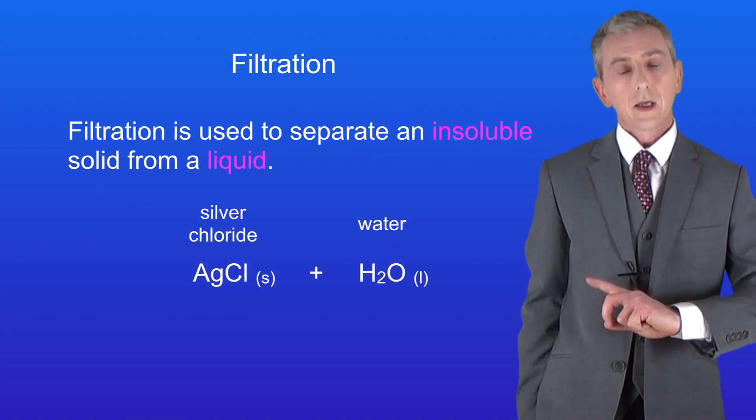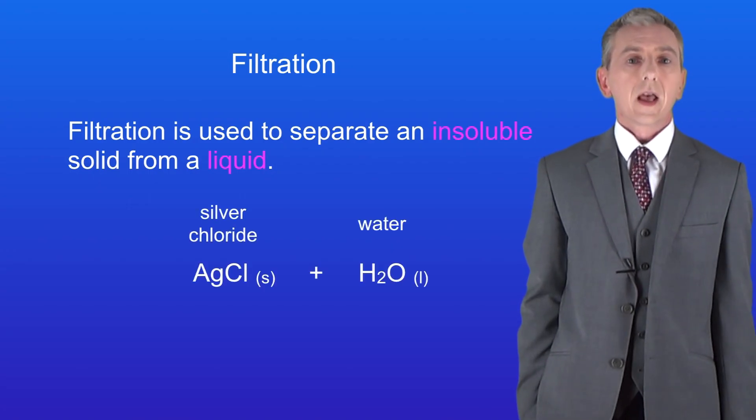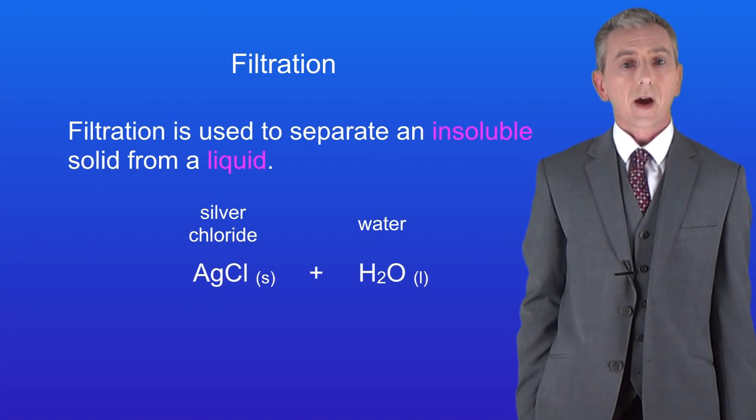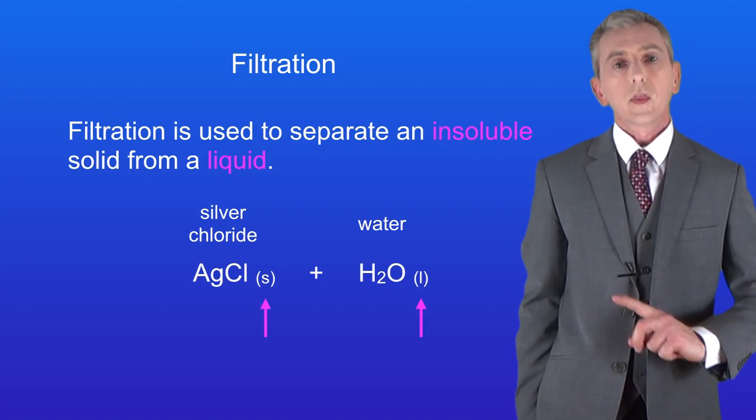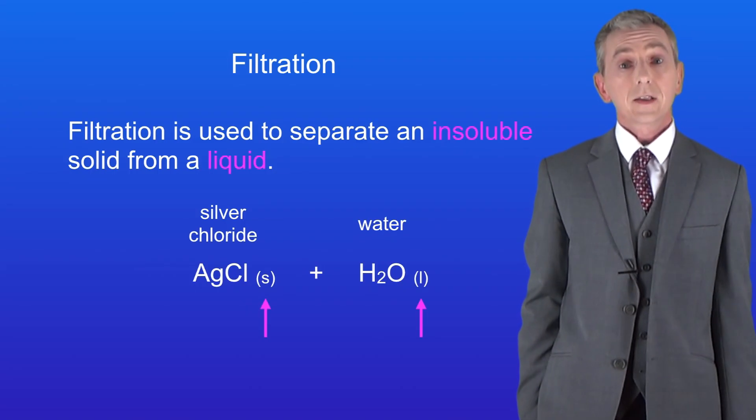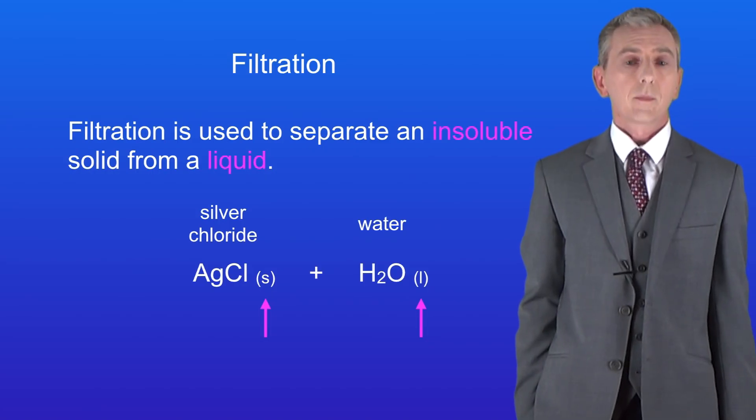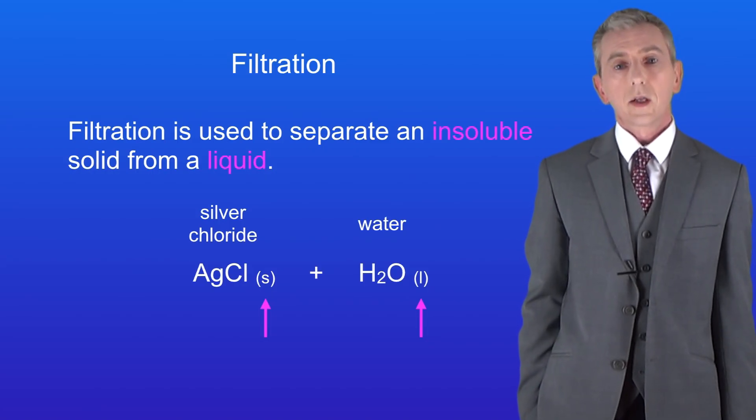So I've got here two chemicals. On the left we've got silver chloride and on the right we've got water. These small letters are called state symbols and they tell us the state of a chemical, for example whether it's a solid, a liquid, a gas or whether it's dissolved in water.